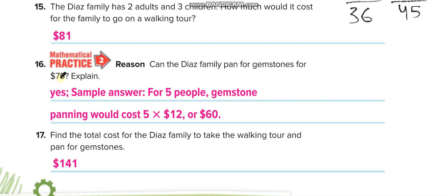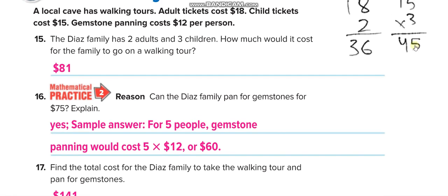Can the Diaz family pan for gemstones for $75? So gemstone—they have how many persons? 2 and 3 is 5. And gemstone panning is $12, so 5 times 12 is 60. So yes, they can do it in $75 dollars. They have enough money.